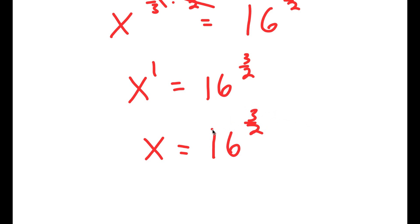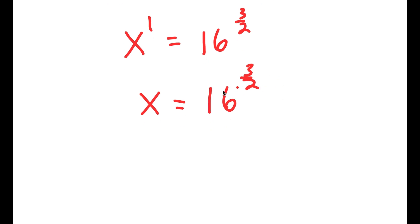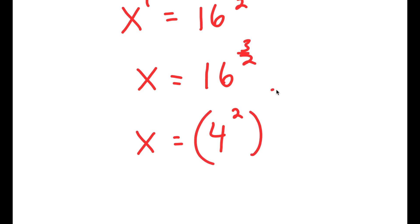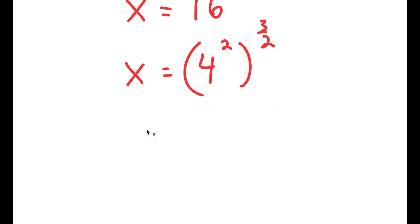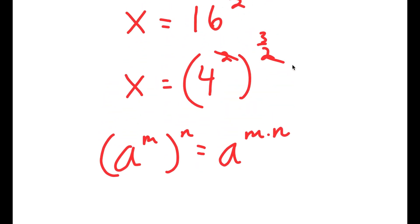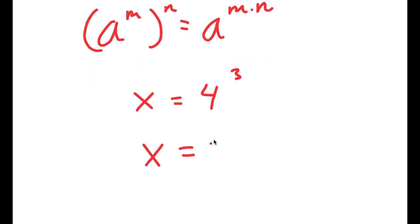However, we're not done yet because we still have to simplify this. 16 to the power of 3 over 2 is the same thing as 4 squared to the power of 3 over 2. And again, if I have something in the form a to the power of m to the power of n, this is equal to a to the power of m times n. So these two cancel out and I get x is equal to 4 to the power of 3, and 4 to the power of 3 is equal to 64. So I get x is equal to 64.